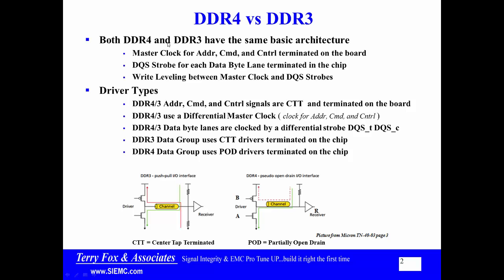Both DDR4 and DDR3 have the same basic architecture. There is a master clock that clocks address, command, and control, and that signal is terminated on the board. I physically have to put a resistor on the board after the last drop. This is a daisy chain termination, and after the last location in the daisy chain, that's where the resistor — line to line on that differential master clock — goes.